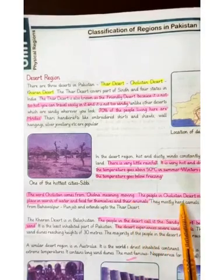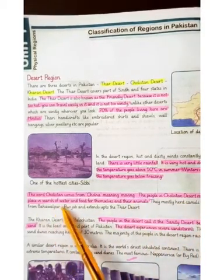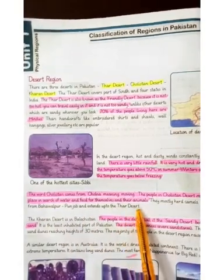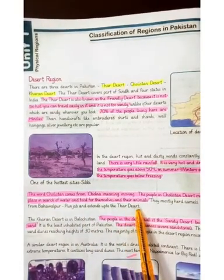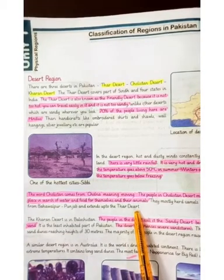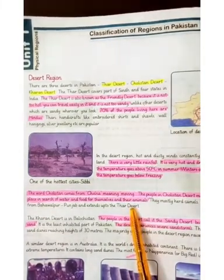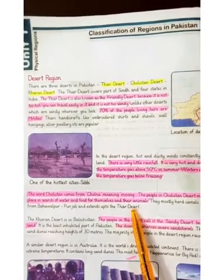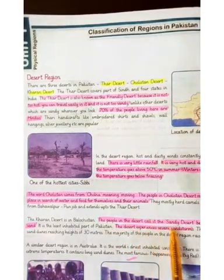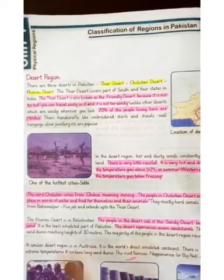The people in Cholistan desert move from place to place in search of water and food for themselves and their animals. Cholistan sehra ke loge ek jaga se dousi jaga haraket kertte raha hai khuraak ki tlash mein. People call it a sandy desert because it is mostly sand.